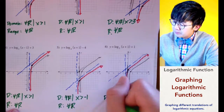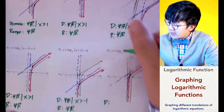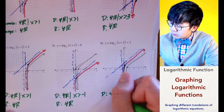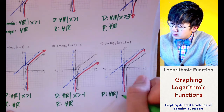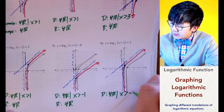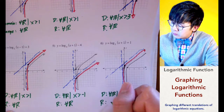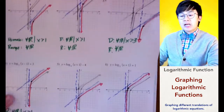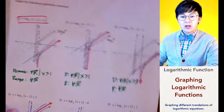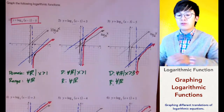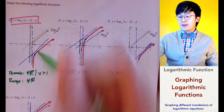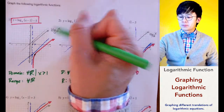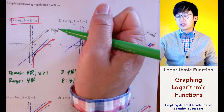For the last function, the vertical asymptote is at negative 1, so the domain is all real numbers such that x is greater than negative 1, and the range is all real numbers. This is how we analyze and graph the logarithmic function using translations from its original basic function of log of x.